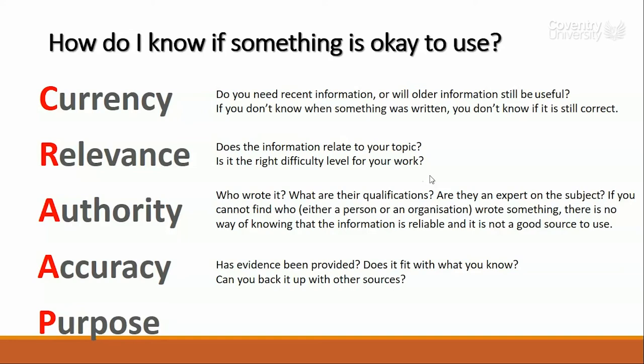The next section is accuracy, and this is all to do with the reliability and correctness of the information in the source. For example, if you're looking at a journal article, check that whoever wrote it has provided evidence to back up any argument, point, or conclusion. Does that evidence fit in with what you already know about the subject, or does it contradict it? And can you back up this information with other sources?